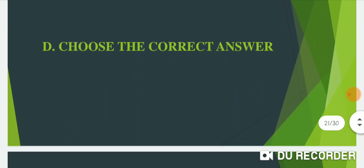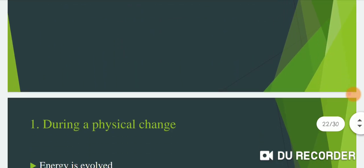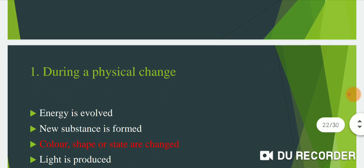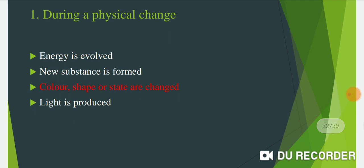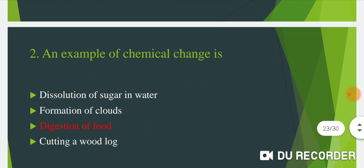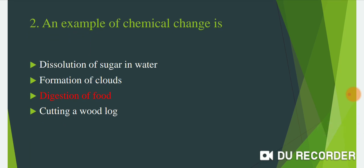Now come to the next question: Choose the correct answer. This is the objective section. Question number one: During a physical change, the answer is — color, smell, or state are changed. Question number two: An example of a chemical change is — digestion of food.